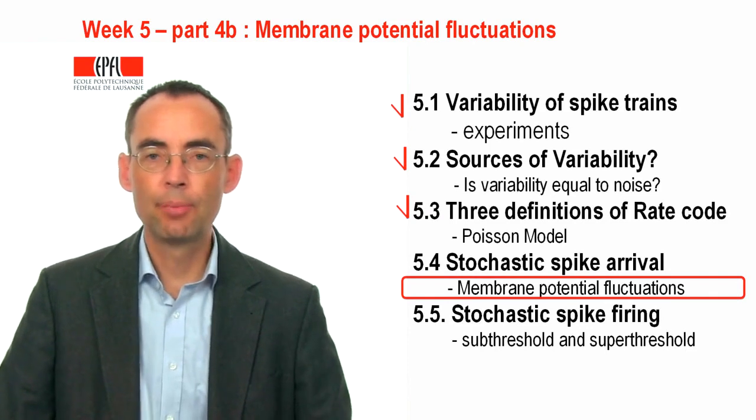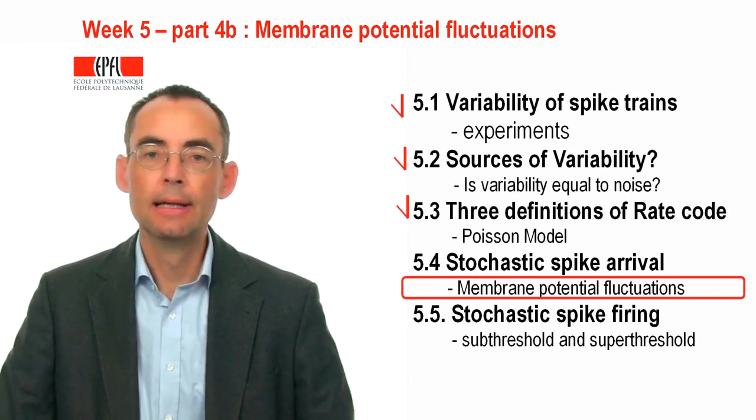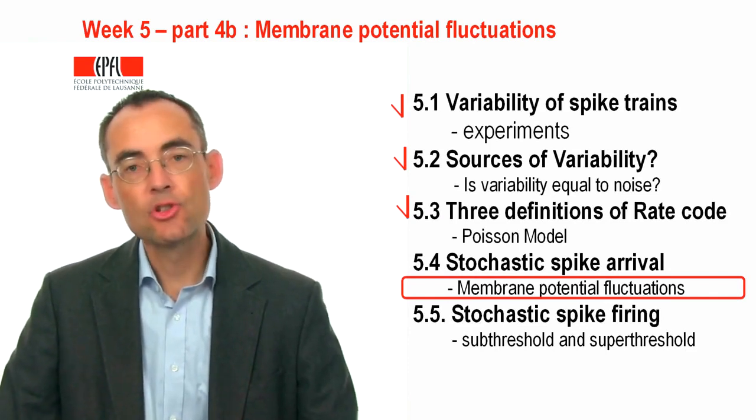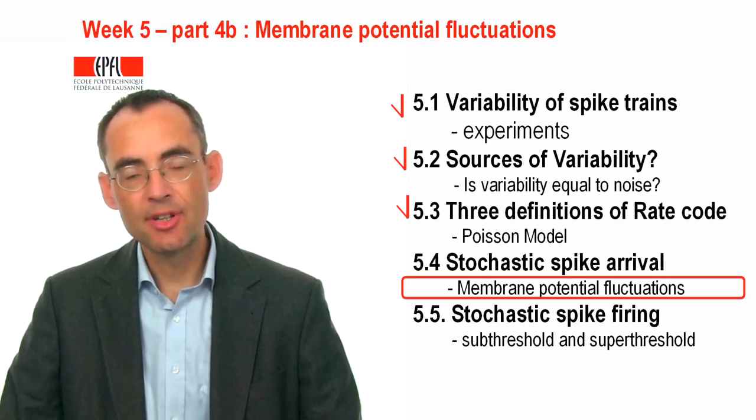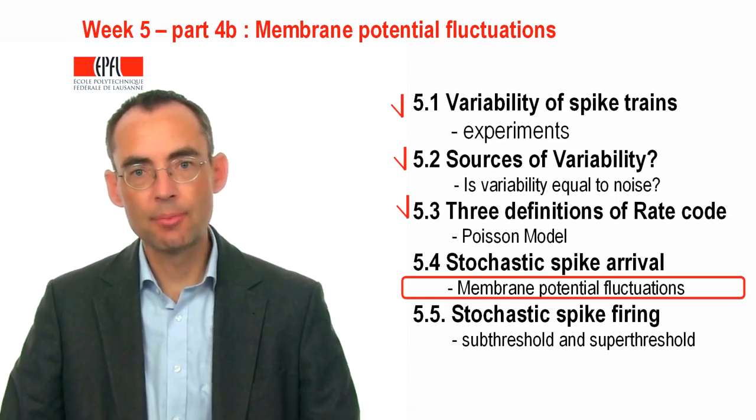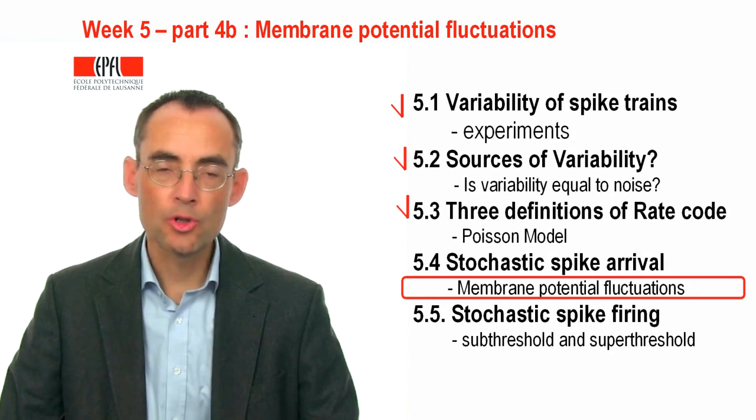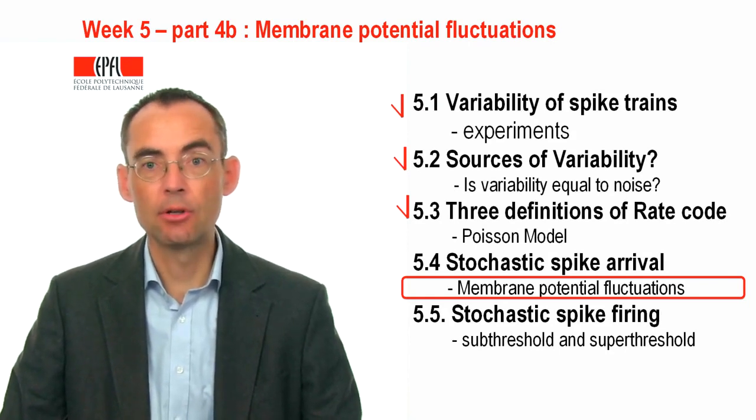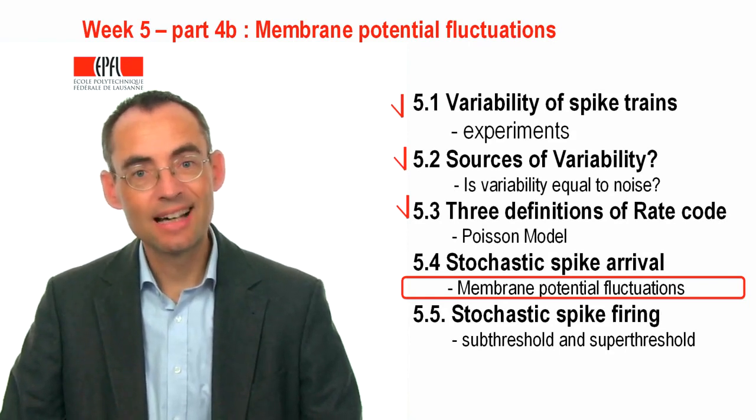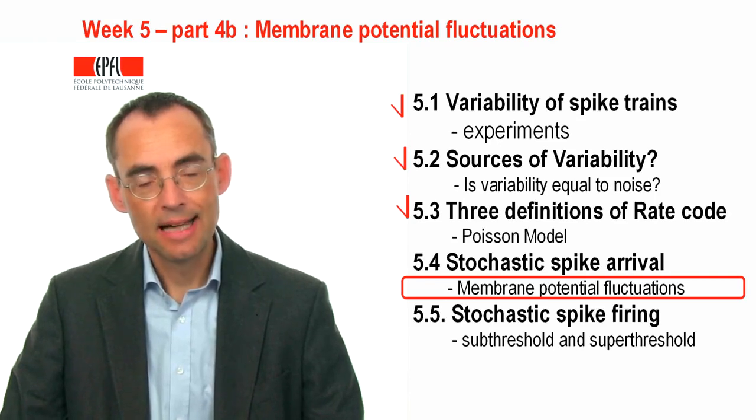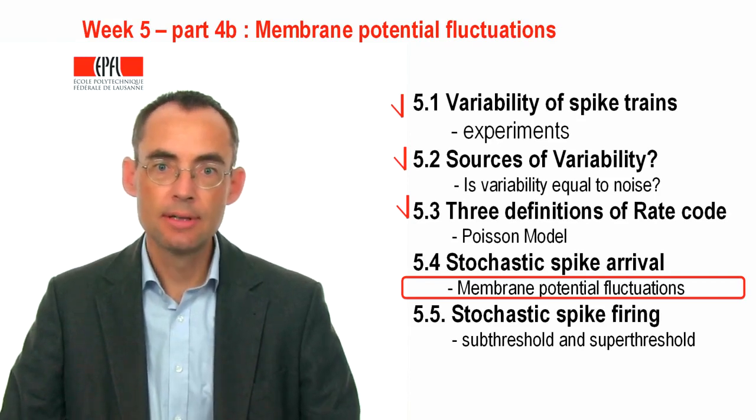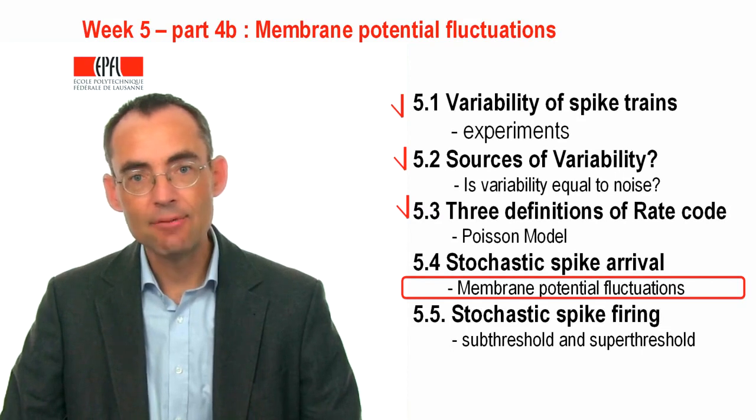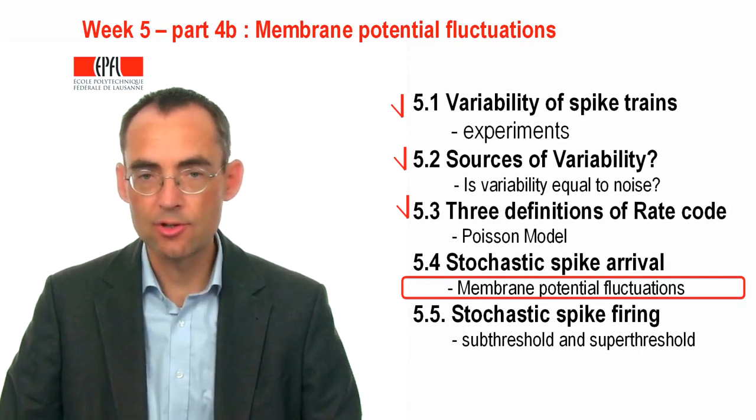So, welcome back to part 5.4. I promised that we would say something about fluctuations of the membrane potential caused by stochastic spike arrival. So far, we calculated the mean. I said a little bit about fluctuations, but the question arises, can we calculate the fluctuations?